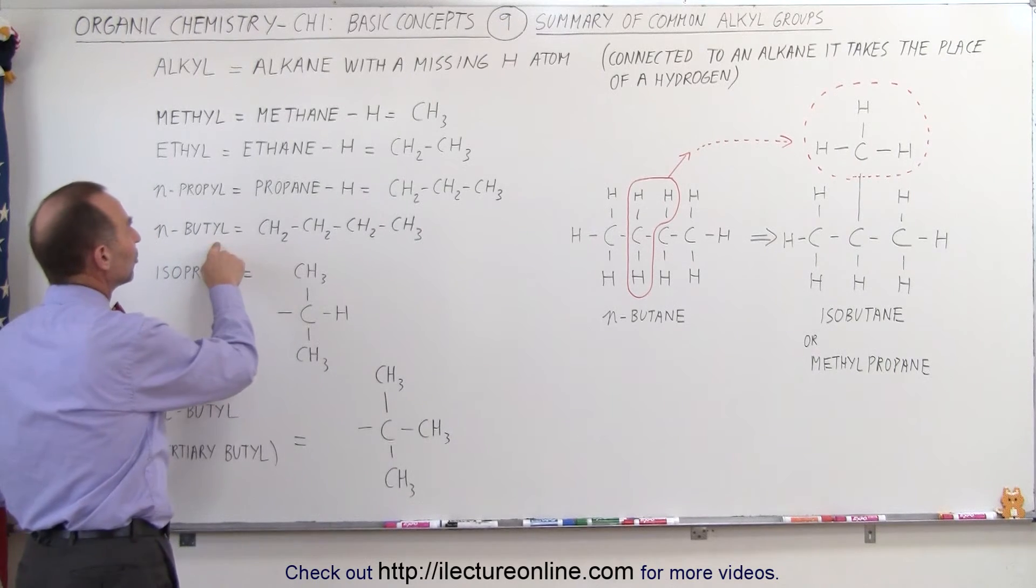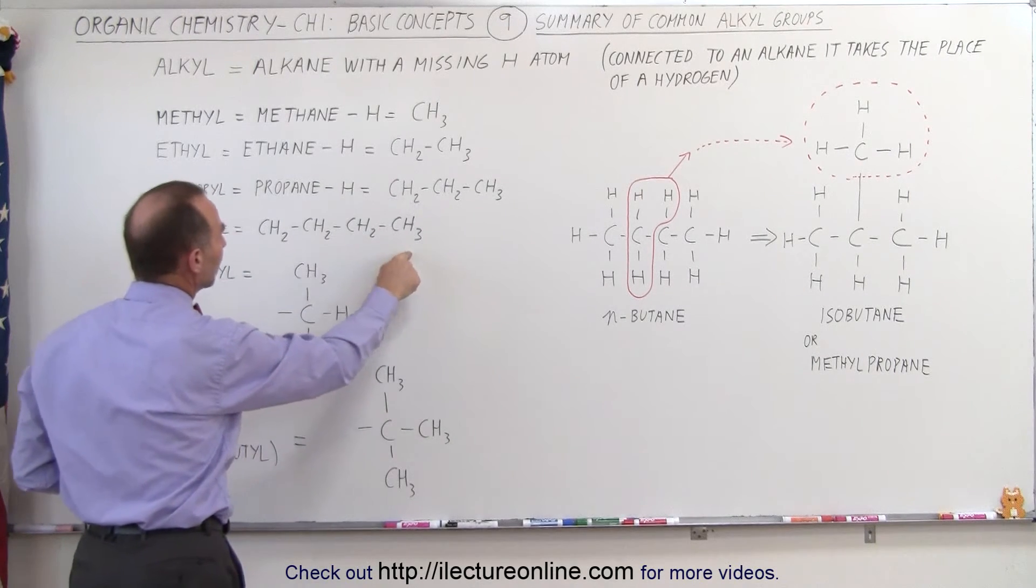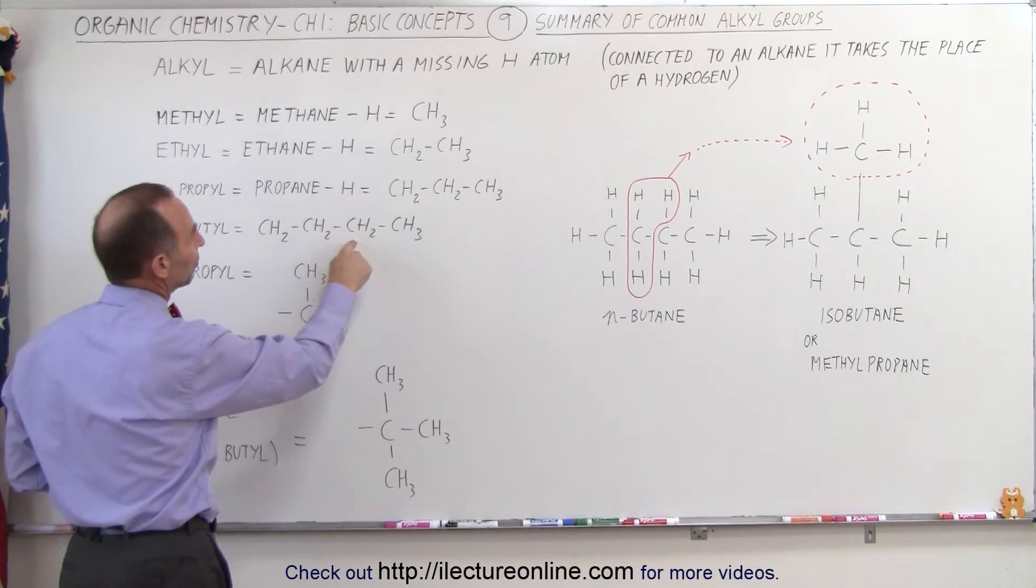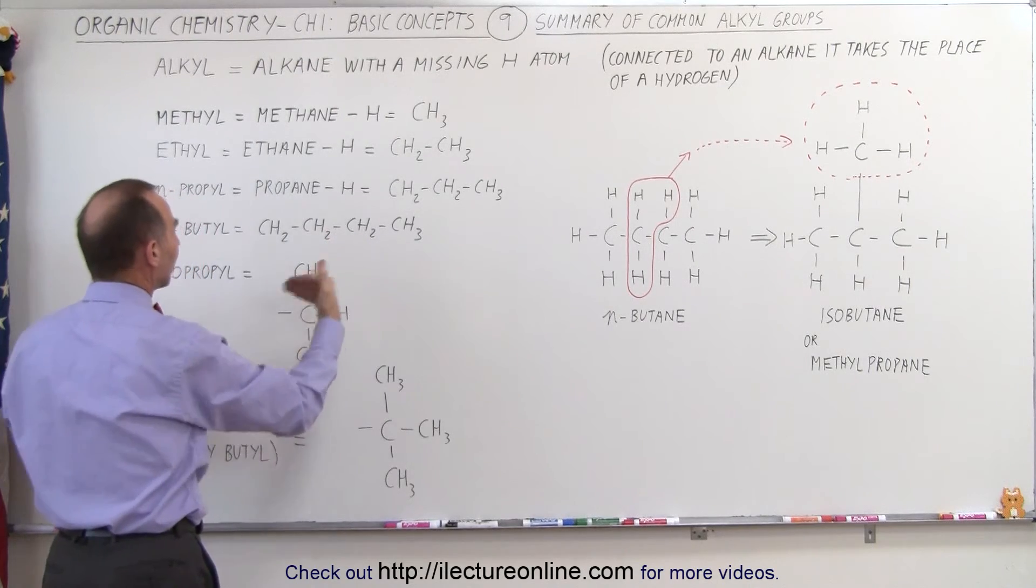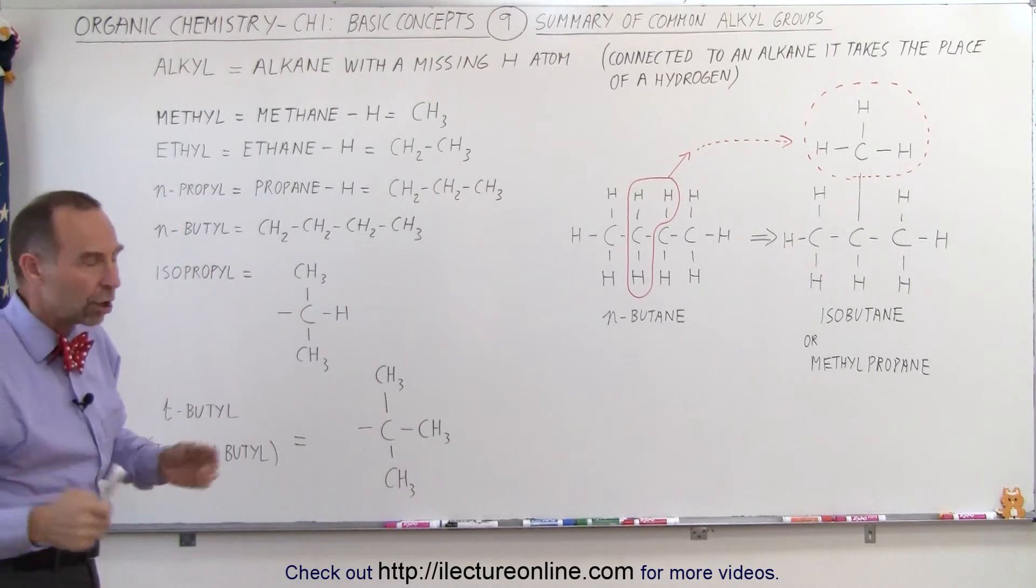We have n-butyl, which is four of these carbons chained together, so CH2, CH2, CH2, and CH3, and onward. Of course, we can have longer, longer chains like that.